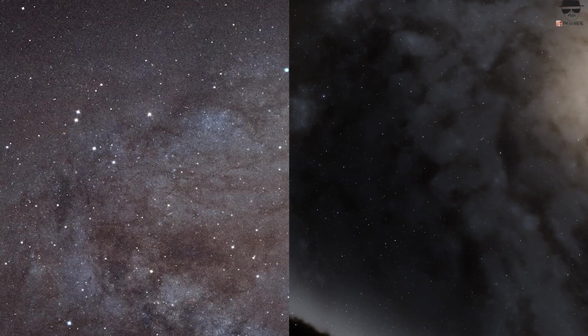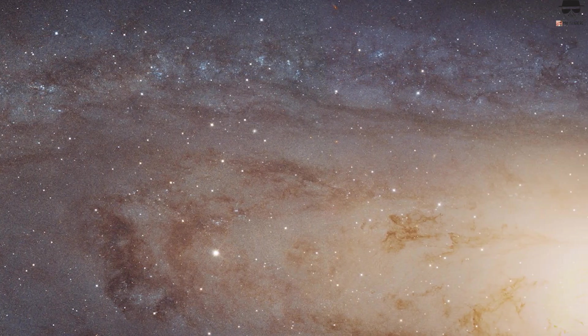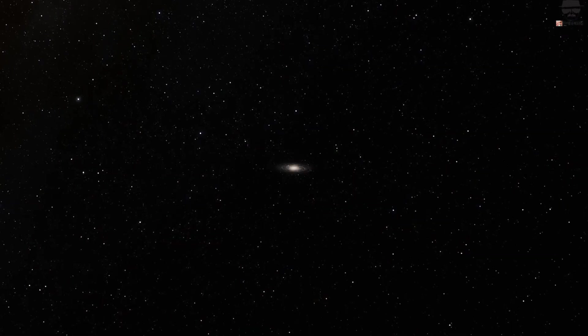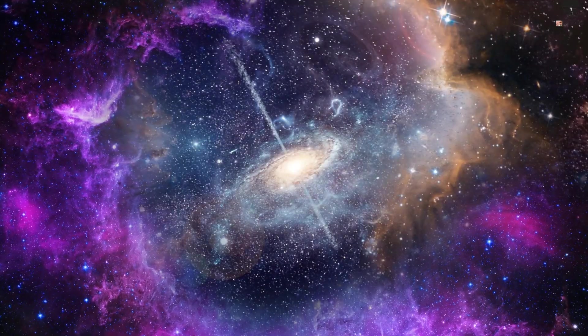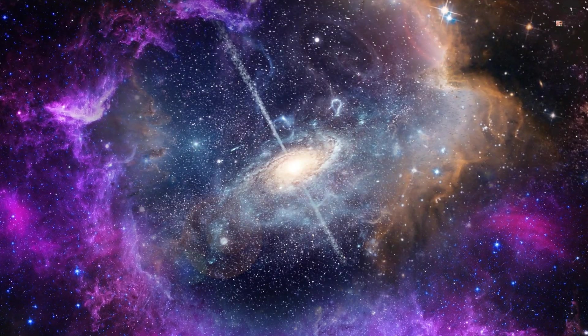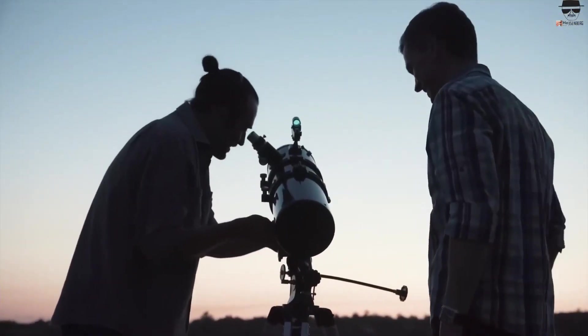But that's not all. The Andromeda Galaxy is also home to a mind-boggling number of stars. Estimates range from 1 trillion to 1.5 trillion stars. And if that's not enough, scientists believe that there may be a massive black hole at the center of the galaxy with a mass equivalent to over 100 million suns.